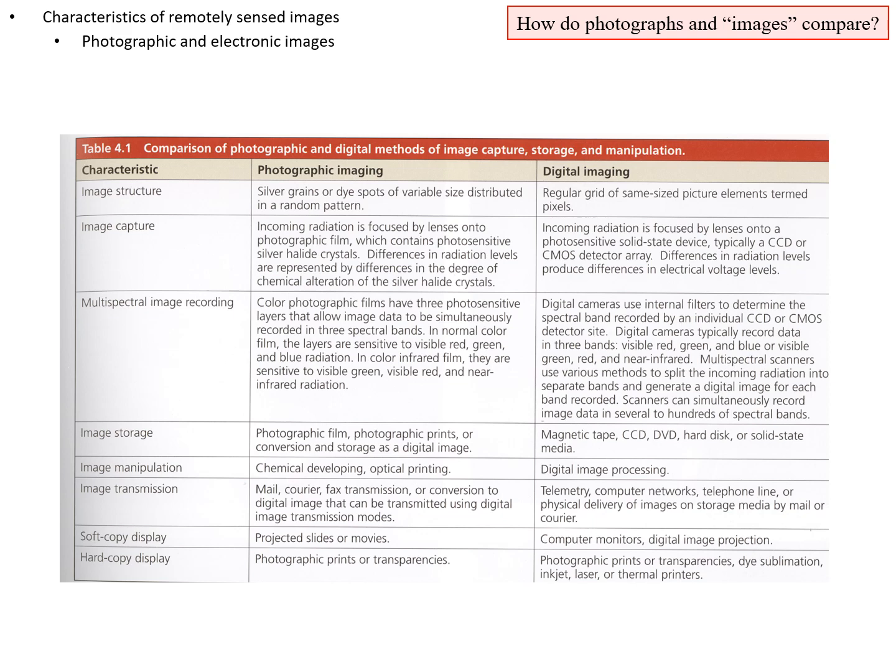Multi-spectral image recording is when you are capturing more than one color. Color photographic films have three photosensitive layers with additional non-photosensitive layers between them. The red layer is sensitive to red light, the green layer is sensitive to green light, and the blue layer is sensitive to blue light. There's another kind of film called color infrared, and in that case there's a different assignment of those colors.